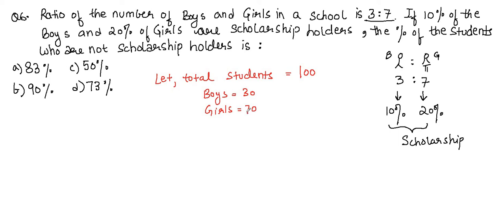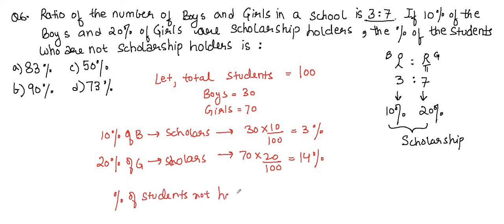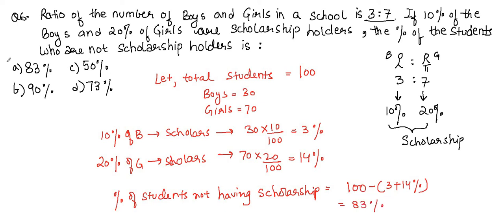Percentage of students not having scholarships = 100 − (3 + 14) = 100 − 17 = 83%. The correct answer is A. The question seems large but the solution is just three lines — very small.